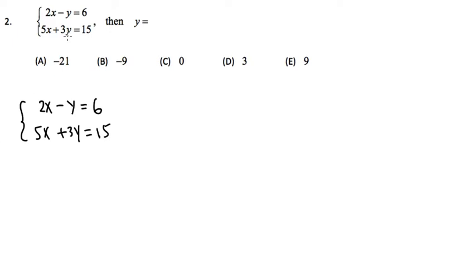For question number two, we are given a system of equations, and that means that we have two equations with two unknowns, namely the x and the y. So for the first equation, we have 2x minus y is equal to 6, and the second equation is 5x plus 3y is equal to 15.